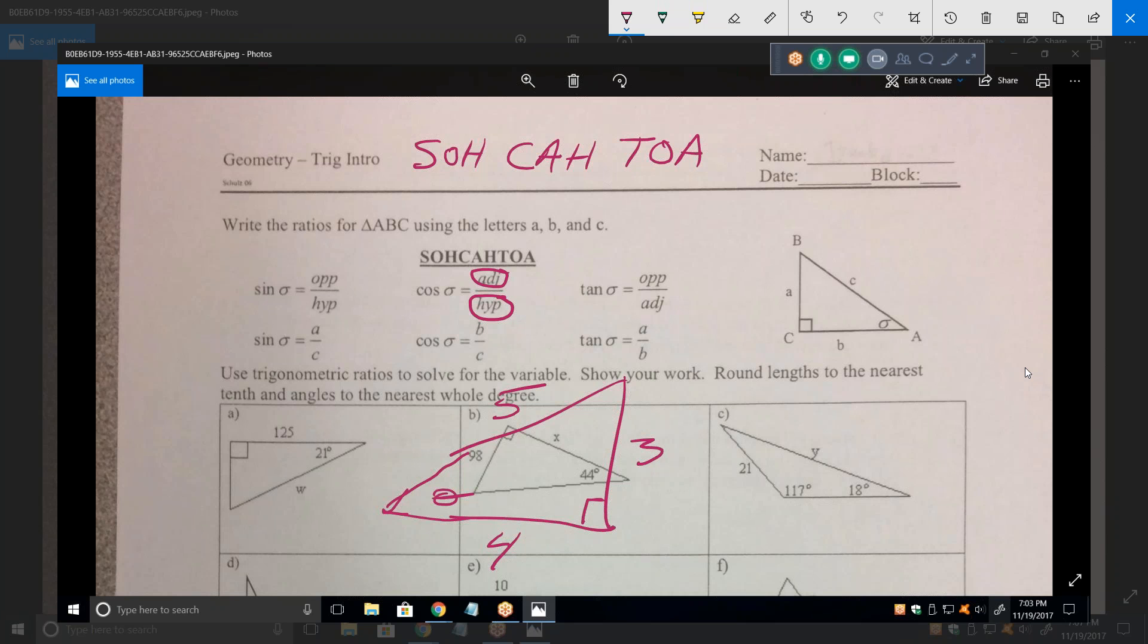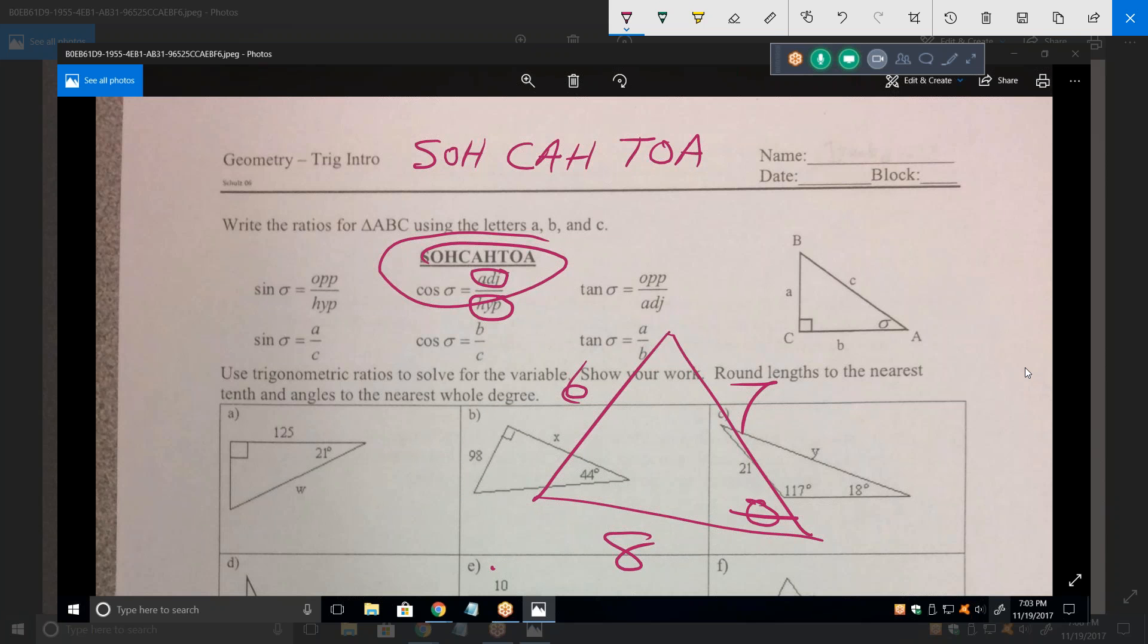Now, incidentally, this SOHCAHTOA here only applies to right triangles. In other words, if I make a triangle like this, and it's six, seven, eight, and there's no right triangles there, and I say, what is the sine of theta? You can't really figure it out yet, because there's no right angle. In other words, SOHCAHTOA is only for right triangles.